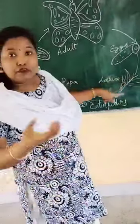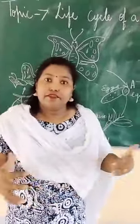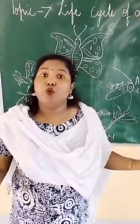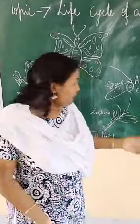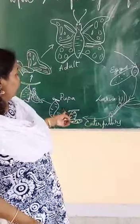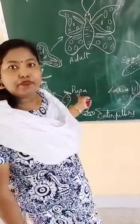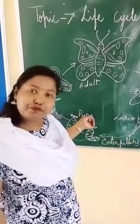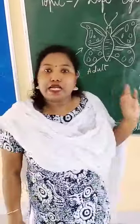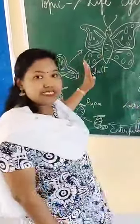These larvae feed on leaves. They eat leaves. As they start eating leaves, they start growing. And then these caterpillars grow into pupa. These caterpillars grow into pupa. And this pupa grows into an adult butterfly. This process continues.